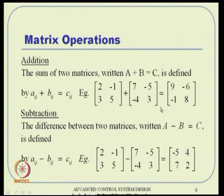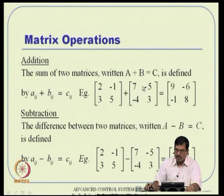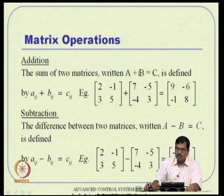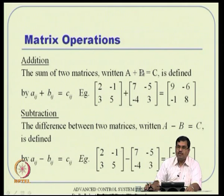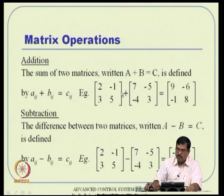Now for basic operations — some of these concepts were skipped in previous lectures, so let us quickly review them. For matrix addition, matrices A and B must be of the same dimension M by N. If so, addition is simply element-by-element. For example, if A and B both have entries, you just add corresponding elements to get matrix C.